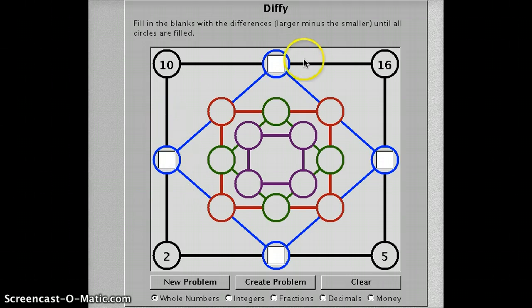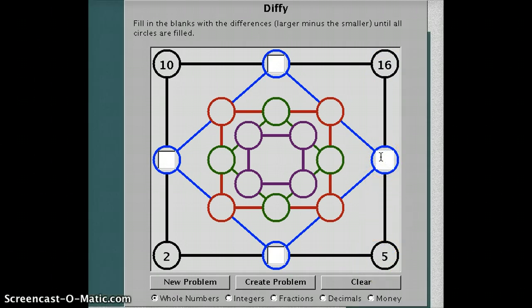So how you play is first it gives you a problem, and you can pick any of these circles to start. So I could start with 16 and 5. If I'm at 16, how can I get to 5? So I know that 16 minus 11 equals 5. You type it in and you press enter, and it will light up blue if you get it wrong.